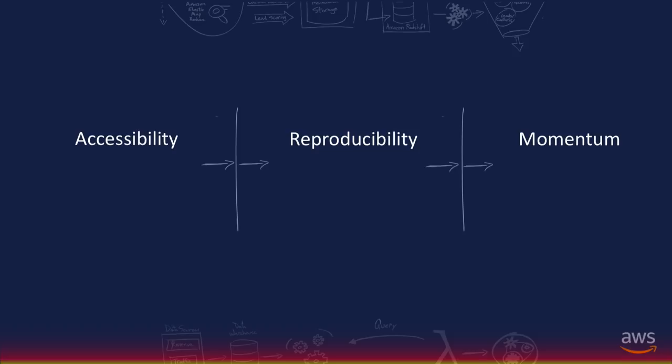To get back to the three pillars I mentioned earlier — accessibility, reproducibility, and momentum. By accessibility, I mean bringing the machine learning platform, frameworks, pre-trained APIs, GPUs, data, and catalog access — all the things that really power machine learning capabilities — into the hands of the people who have to use it. As an organization, you need to make sure your data assets are accessible and that the infrastructure is accessible.